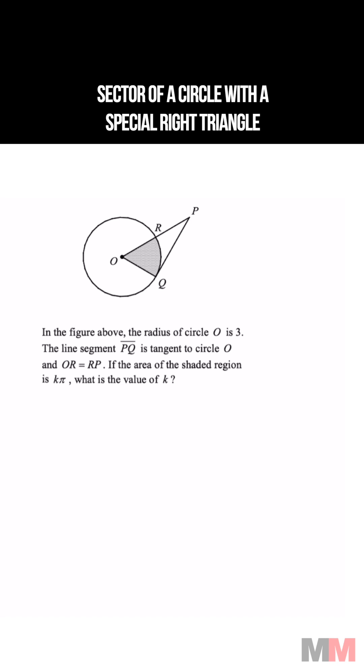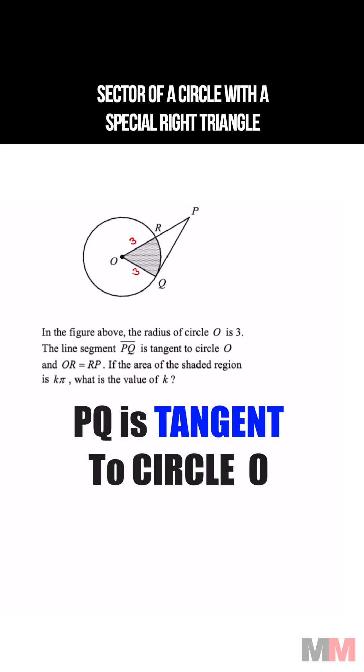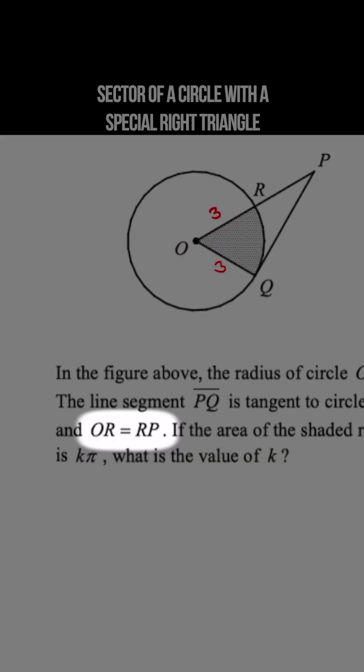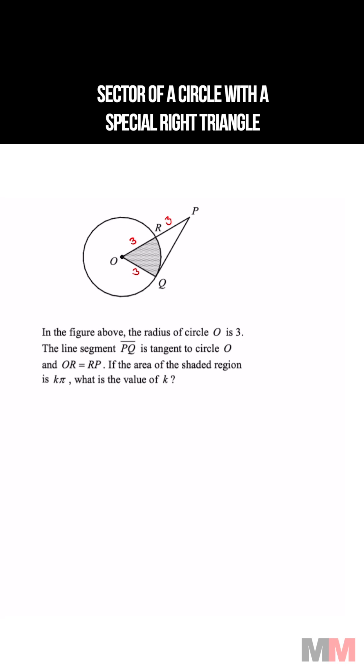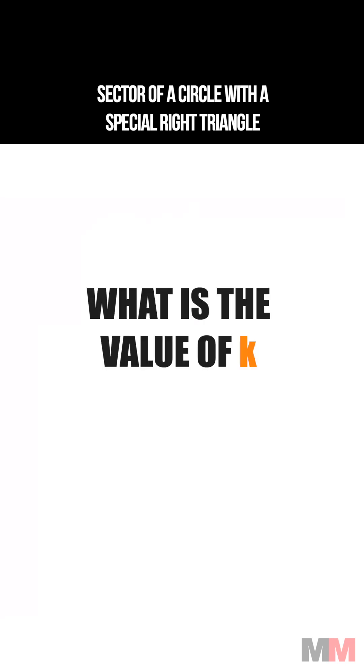The radius of the circle O is 3. The line segment PQ is tangent to O and OR is equal to RP. If the area of the shaded region is K times pi, what is the value of K?